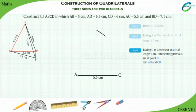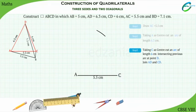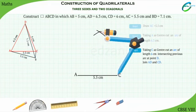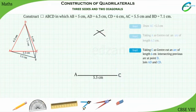Step 3: Taking the previous arc at point D. So placing the compass pointer at point C and taking the measurement 6 cm, cut an arc intersecting the previous arc at point D.